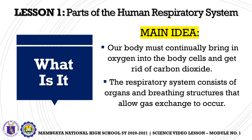Lesson one, what is it? In this lesson we have the following main ideas. Number one: our body must continually bring in oxygen into the body cells and get rid of carbon dioxide. Number two: the respiratory system consists of organs and breathing structures that allow gas exchange to occur.